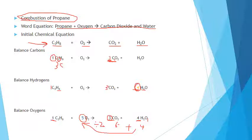One thing to notice about alkanes: anytime you start with an odd subscript there will be a whole number for O2, and anytime you have an even subscript there'll be a half — that's if you put one in front of the alkane. These are tricks to look for when you do these problems.